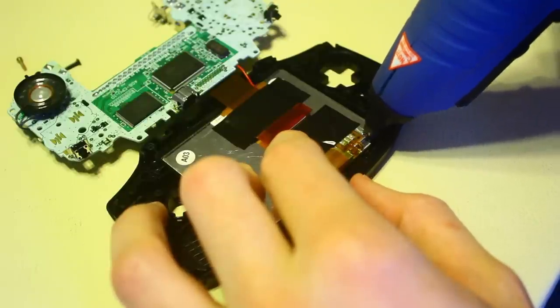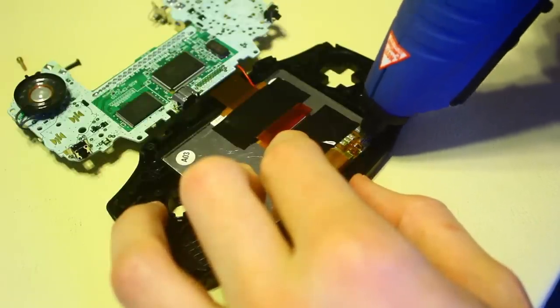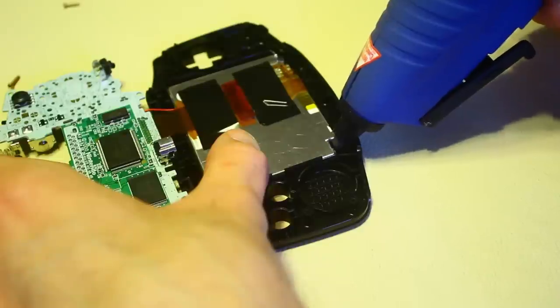Now you can secure the screen to the front panel by putting two dabs of hot glue on the two lower corners, the right and left corners.